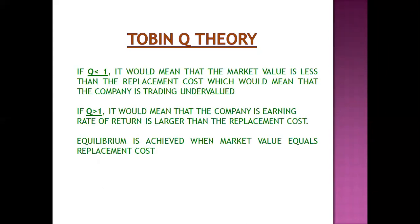The interpretation we draw from this ratio is: if the factor Q is less than 1, it would mean that market value is less than the replacement cost, which means the company is trading undervalued. If Q is greater than 1, it would mean that the company's rate of return is larger than the replacement cost. If Q is equal to 1, it means that equilibrium is achieved. All three interpretations help an investor in making a decision in a practical scenario.